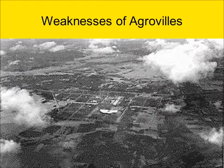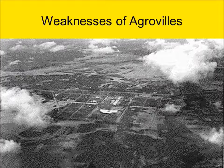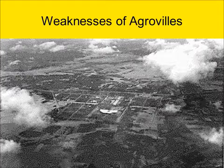Most peasants believed that the traditional ways of life had been unjustly disrupted for reasons they couldn't understand. Even worse, many more peasants would sometimes be used to construct an agraville than could possibly live there. In one example, 20,000 peasants were forced to build an agraville that could only hold 6,000 inhabitants, meaning 14,000 people essentially worked for free and neglected their own crops. This bred resentment and destroyed any goodwill the Diem regime might have gained from these agrovilles.